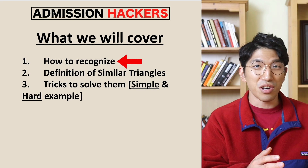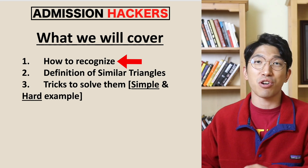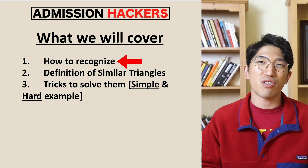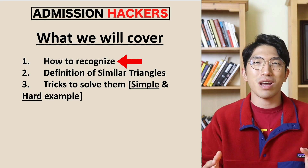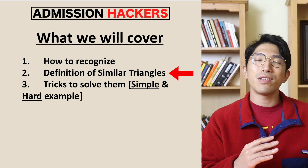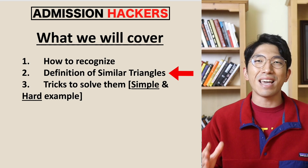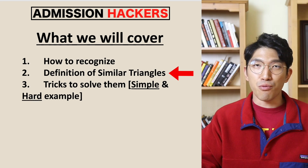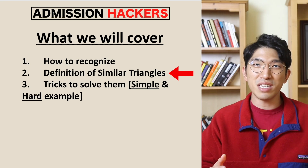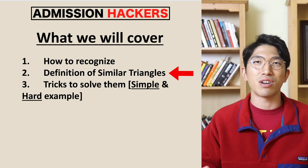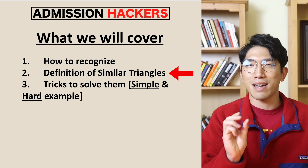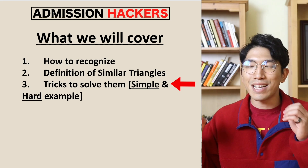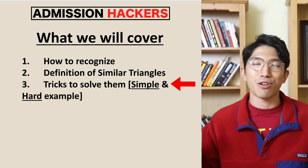First, we're going to break down exactly what these questions look like and how you can recognize that these triangle questions are about similar triangles, because similar triangles is not the only thing — there could be Pythagorean Theorem, 30-60 Special Right Triangles, or trigonometry. Second, we're going to go over the definition of a similar triangle. Third, we're going to go over the tips and tricks to solve these questions as quickly and accurately as possible so you start raising your SAT score.